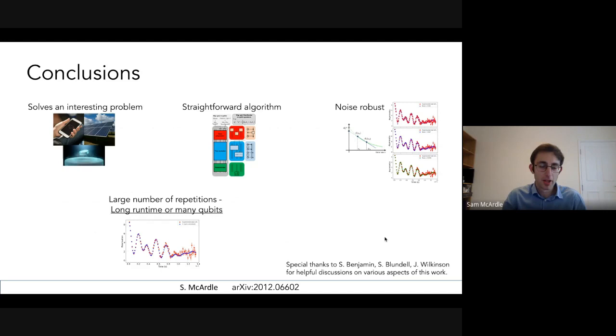So, yeah, in conclusion then, hopefully what I've shown is that analyzing experimental data could be an interesting problem for us to solve. It can lead to quite straightforward algorithms that appear to have a degree of noise robustness, but all quantum simulation algorithms are probably going to face a challenge of having a very large number of repetitions. And this will either lead to having long runtime for the algorithm or we're going to have to consider having more qubits or working to develop ways of speeding up the calculation. Things like single-shot error correction or other approaches we haven't thought of just yet. So, yeah, that's everything from me and I'm happy to answer any questions that people have.